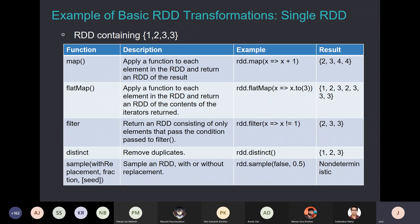One operation you will be using now and then is called the map operation, just like the map function you write in MapReduce. The map operation is applied to each element in the RDD — for each element you apply the operation and return some result. Assuming my RDD contains data one, two, three, three, this is the data I have in my RDD.